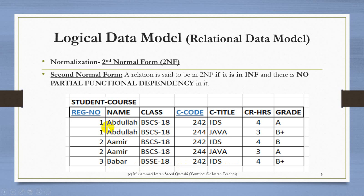If Abdullah says 'please make my name Muhammad Abdullah,' we will have to make that change as many times as reg number one Abdullah is present in this table — that is modification anomaly. Similarly, if we want to change the title from IDS to Introduction to Database System, we have to make that change as many times as IDS appears. Also, if we delete a student record, associated course data like course 242 with 4 credit hours gets deleted too — that is deletion anomaly.